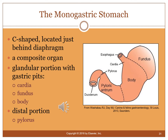The monogastric stomach is a backward C-shaped organ located just behind the diaphragm on the left side of the animal — useful for orienting radiographs. It has several regions: the fundus, the cardia (with the cardiac sphincter closest to the heart), the body, the pyloric antrum, and the pylorus, which has the pyloric sphincter leading into the duodenum.